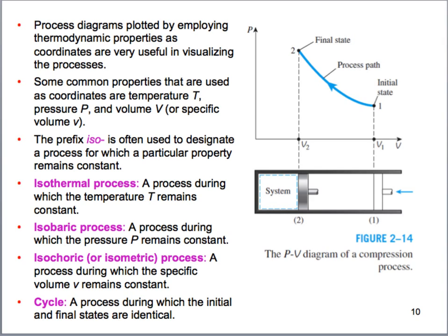So if I say isothermal, you know that temperature is constant. Isobaric means pressure is constant. Isochoric means volume is constant. So you can take that with you and as we use it in our lectures, you'll know what I mean when I mention this is an isobaric process.